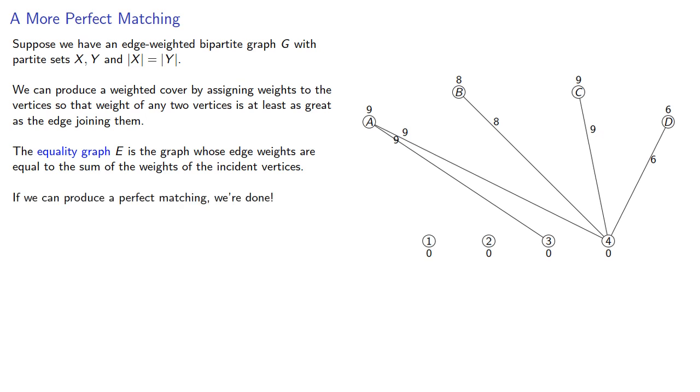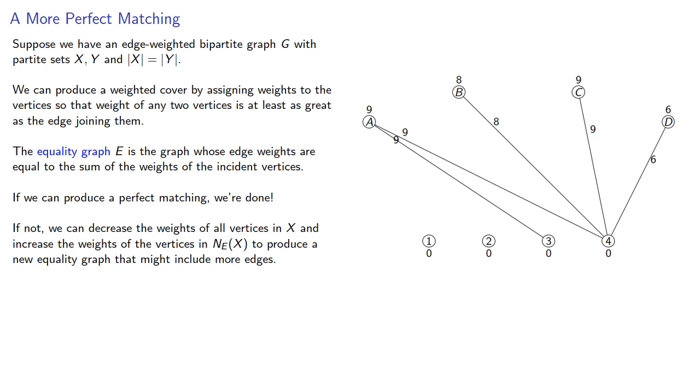If we can produce a perfect matching, we're done. If not, we can decrease the weights of all vertices in X and increase the weights of the vertices in the neighborhood of X to produce a new equality graph that might include more edges.